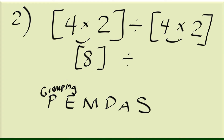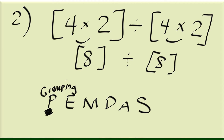We're not going to do division yet because PEMDAS says you have to perform parentheses first. If there's any arithmetic that needs to be done inside, you have to do it first — which is 4 times 2 here. So we perform that first. Then 8 divided by 8 is equal to 1.